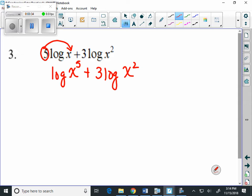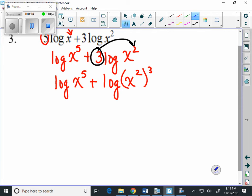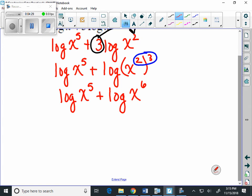The same thing is going to happen. We're going to have to take this 3 and raise that to the power. So we already simplified log of x to the fifth, and now this is going to become log of x squared cubed. Let's work with our exponent rules. When we have x squared cubed, we multiply those two exponents together. We get log of x to the fifth plus log of x to the sixth. We multiplied 2 times 3, we get 6.